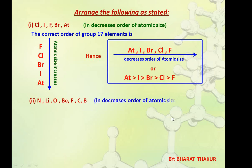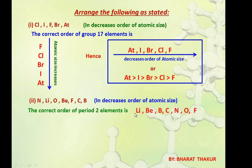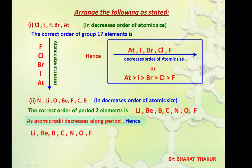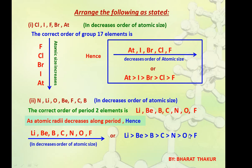One more question: arrange Lithium, Oxygen, and Beryllium in decreasing order of their atomic size. Identify that these are members of period 2. The correct order of period 2 elements is: Li, Be, B, C, N, O, F, Ne. Since atomic size decreases from left to right, the decreasing order of atomic size is: Li > Be > O. We can write this with a less-than arrow or symbol showing atomic size decreases from left to right.